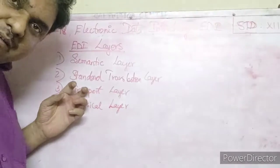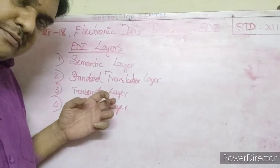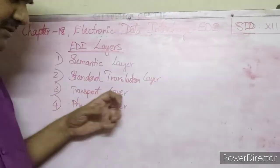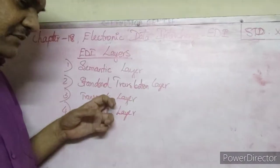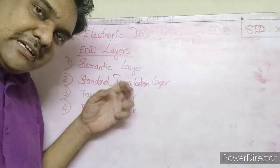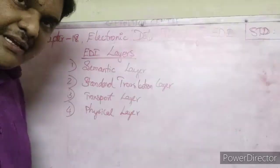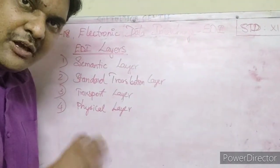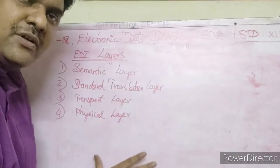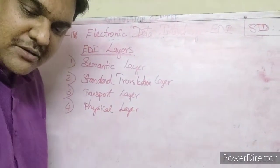The Transport Layer checks who transferred the data, selects the route, and ensures it is sent safely and securely. The data to be sent is determined by the Semantic Layer and application layer. So these are the four layers of EDI — very important for two-mark and three-mark questions.